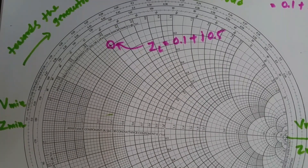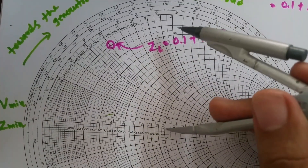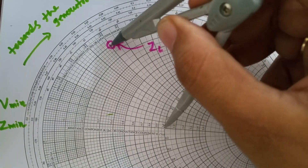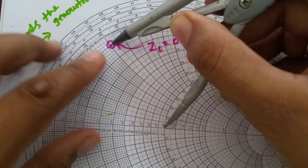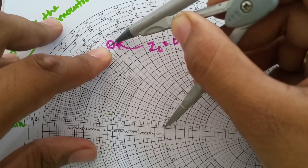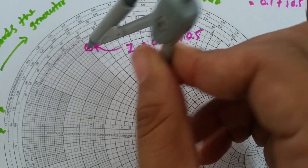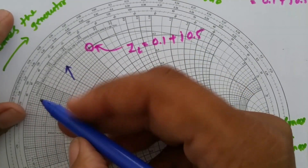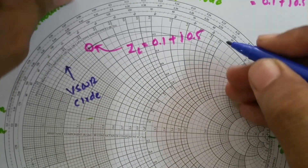Using this point we can draw a VSWR circle, which is a circle plotted with respect to the center. We are tracing the circle with respect to ZL — this is the VSWR circle.